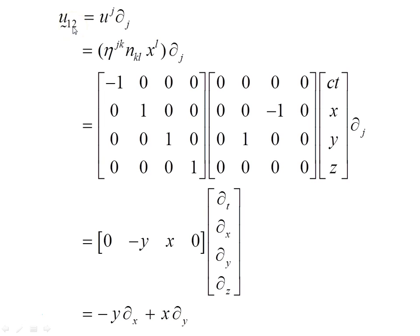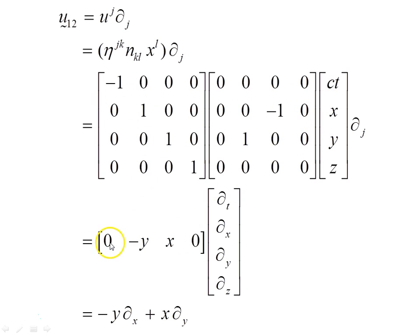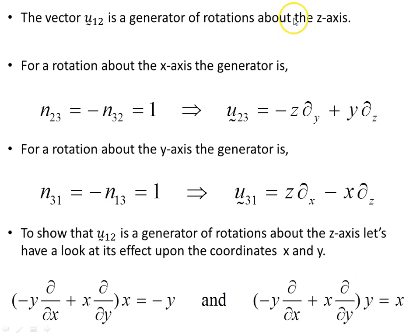With i picked as 1 and j as 2, as seen on the previous page, we expand beta superscript jk times the anti-symmetric matrix. This is the Minkowski metric multiplied by our anti-symmetric matrix and the coordinates in Minkowski spacetime times the basis vectors. Multiplying out those three objects gives this row vector times the basis column vectors, yielding this vector where d_x is a basis vector in the x-direction and d_y in the y-direction. This vector is a generator of rotations about the z-axis.